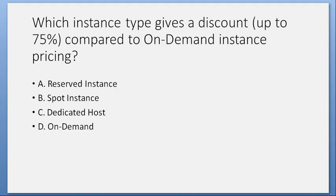Which instance type gives a discount up to 75% compared to on-demand instance pricing? A. Reserved instance. B. Spot instance. C. Dedicated host. D. On-demand. Answer: A. Reserved instance.